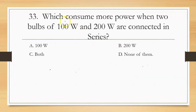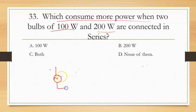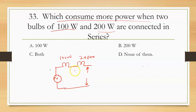Which consumes more power when two bulbs — 100 watts and 200 watts — are connected in series? Now they are connected to a voltage source in series. You have two lamps: lamp 1 is 100 watts, lamp 2 is 200 watts. Power formula: P1 and P2, V squared.